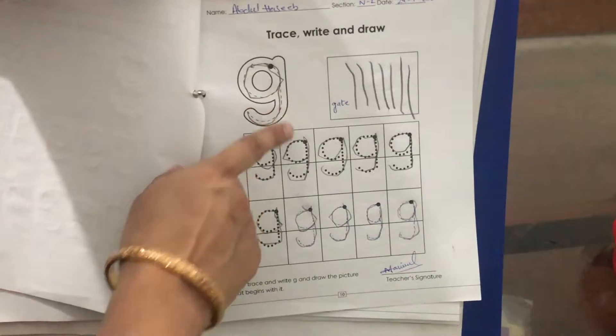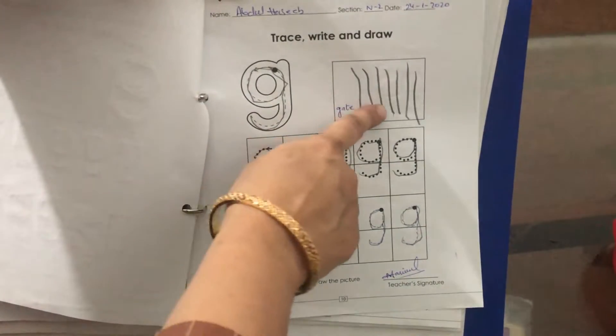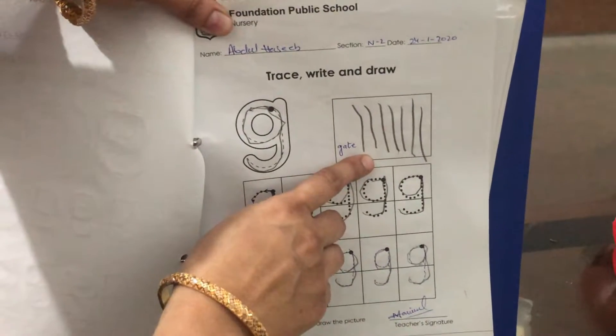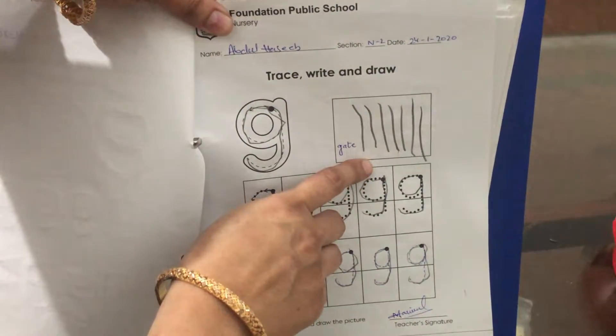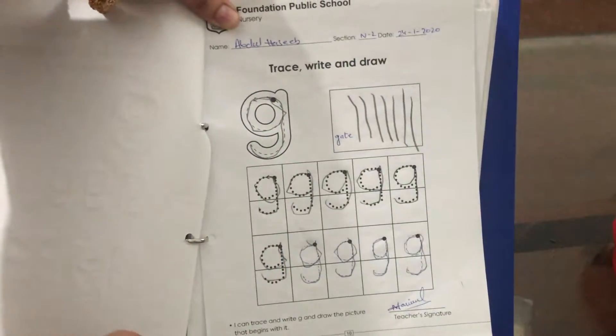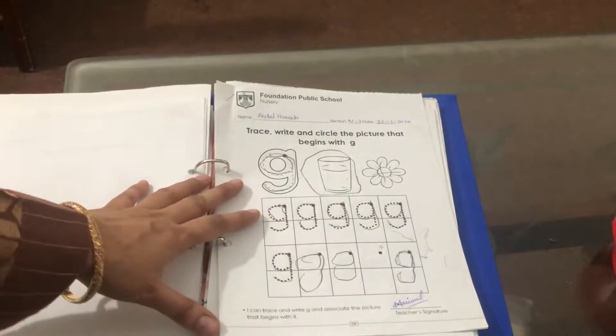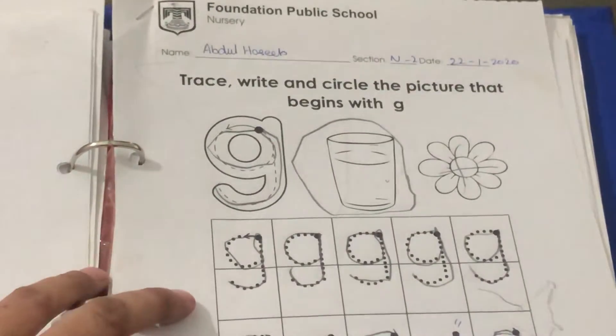Next, trace, write and draw. Here we have to do tracing writing of ga and then draw any picture that begins with the sound ga. You can see gate, so here my daughter has drawn a gate. Any picture can be drawn here.